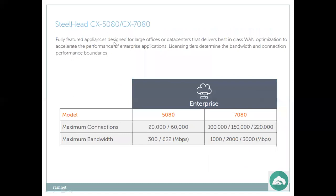The CX 5080 and CX 7080 are fully featured appliances designed for large offices or data centers, delivering best-in-class WAN optimization to accelerate enterprise applications. Licensing tiers determine the bandwidth and connection performance boundaries. Maximum connections range from 20,000 to 60,000 for the 580 model, with maximum bandwidth from 300 to 622 Mbps. The higher-end platforms support 100,000 to 220,000 connections and bandwidth up to 3,000 Mbps.